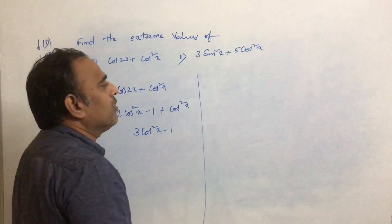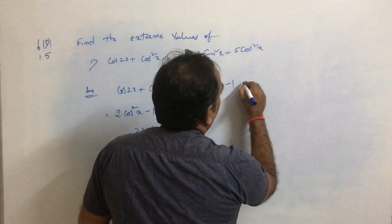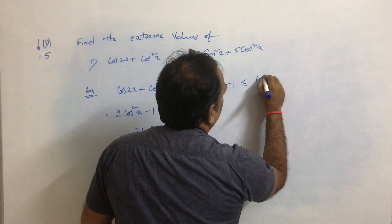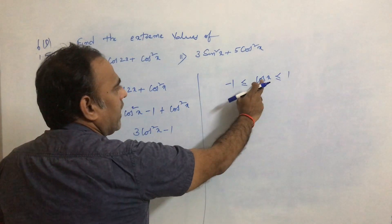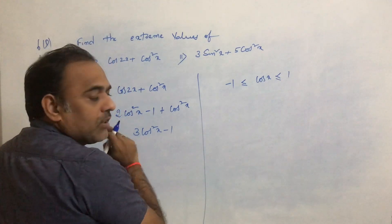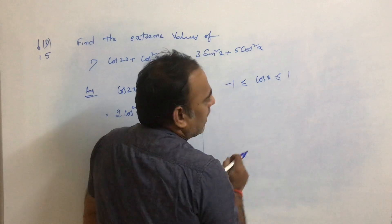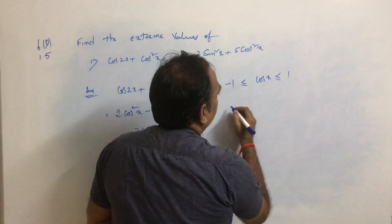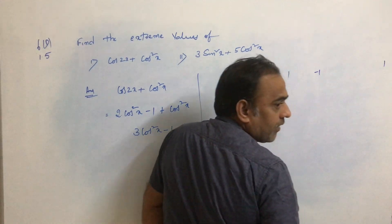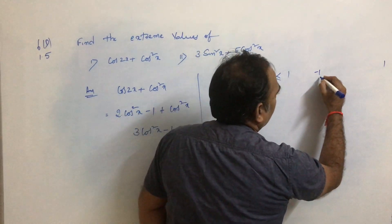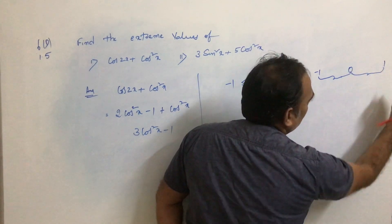We know the extreme values of cosx: minus 1 is less than or equal to cosx, which is less than or equal to 1. We need to convert this range for cosx into one for 3cos²x minus 1. So we apply the square. The range of cosx is minus 1 to 1, which covers minus 1 to 0 and 0 to 1.